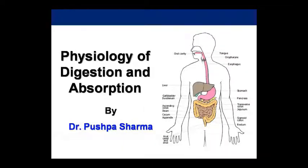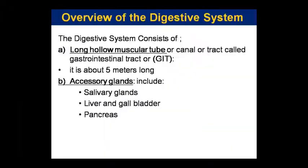Good morning class. This is our anatomy and physiology class in which today we will study some remaining portion of the physiology of digestion and absorption, which comes under the topic of the digestive system. The digestive system is built as a long hollow muscular tube and its accessory glands. It can be called a hollow muscular tube, muscular canal, or muscular tract. It is also called GIT, gastrointestinal tract, and this tube is 5 meters long.